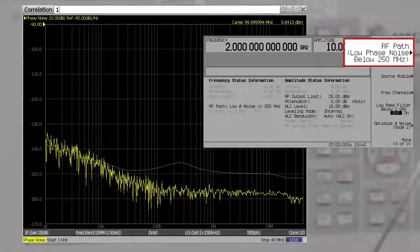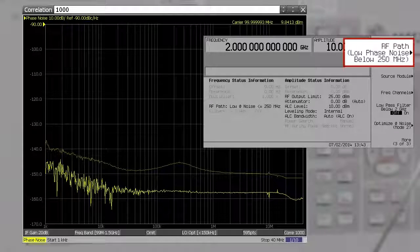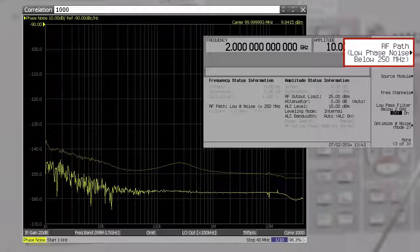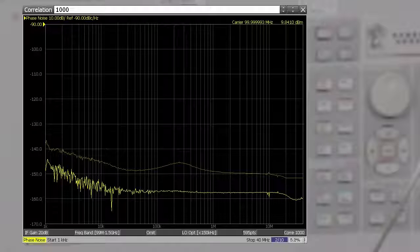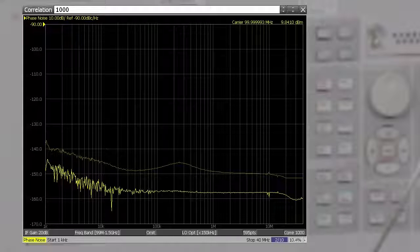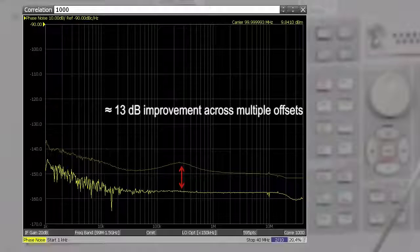There's also a low phase noise mode, and in this mode the PSG adds low noise dividers into the signal path. This reduces the maximum deviation of the modulated signals but it improves the phase noise. Here you can see a 13 dB improvement across multiple offsets from the carrier.